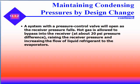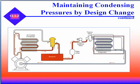A system with a pressure control valve will open as the receiver pressure falls. Hot gas is allowed to bypass into the receiver at about 20 PSI pressure difference, raising the receiver pressure and increasing the flow of liquid refrigerant to the evaporators. This is an example of the hot gas version of pressure control. Notice the solenoid valve for the pump-down system, and notice the yellow bypass valve that allows hot gas out of the discharge line — prior to the air-cooled condenser — to move into the receiver if needed.